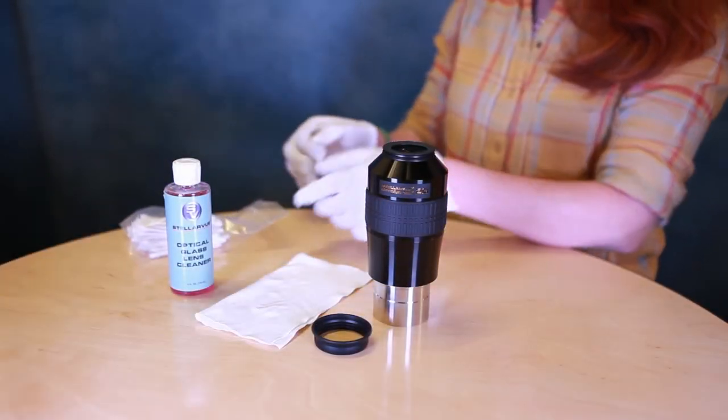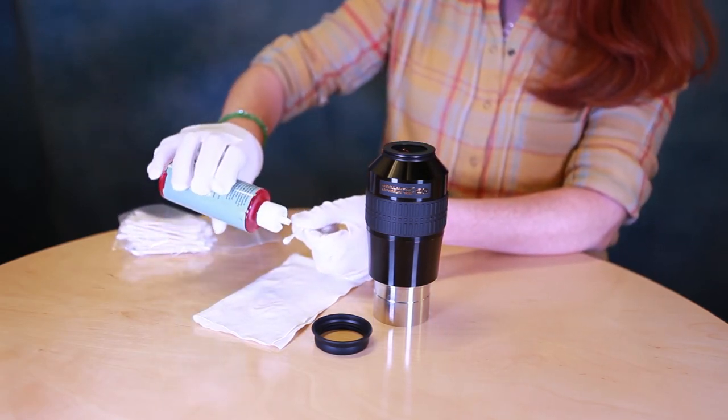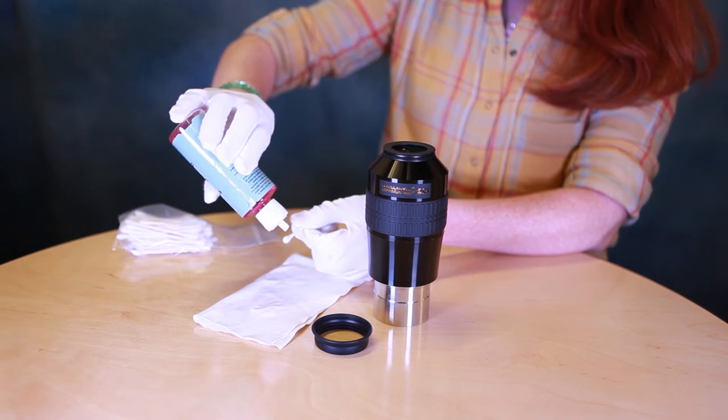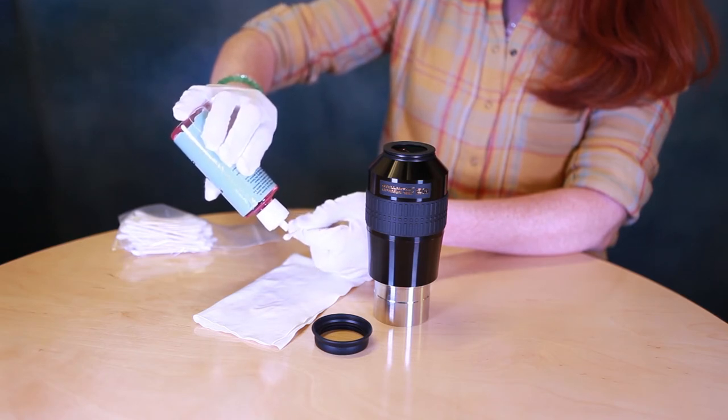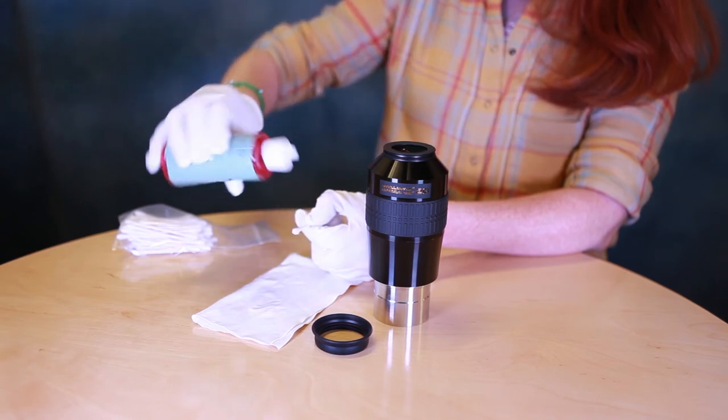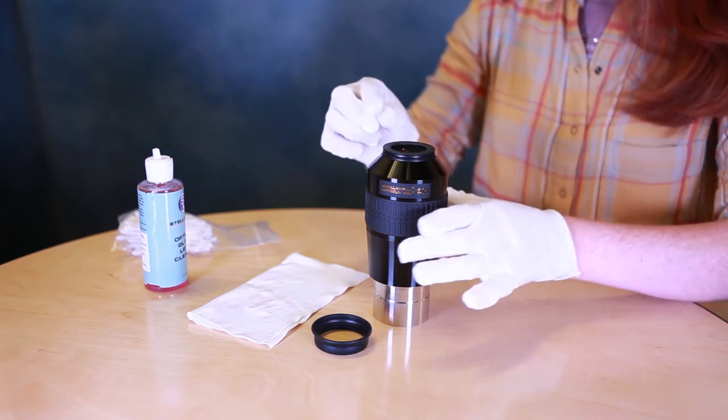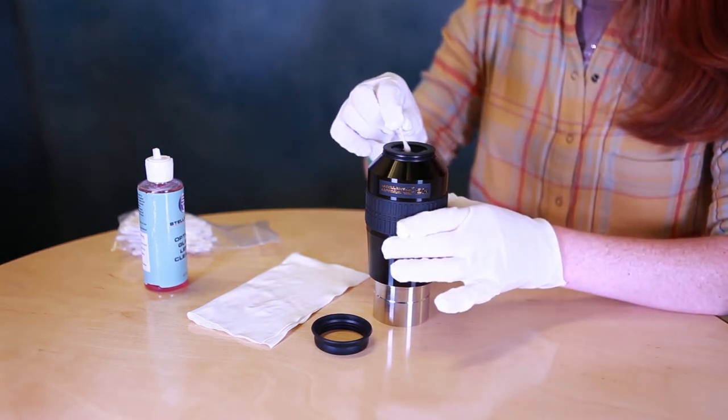Put a few drops of lens cleaner on the cotton swab. Notice we store the cotton swabs in the Ziploc bag. We keep them clean that way and only take them out when we use them. If necessary, if you get too much fluid on the cotton swab, you can dab it on the microfiber cloth.